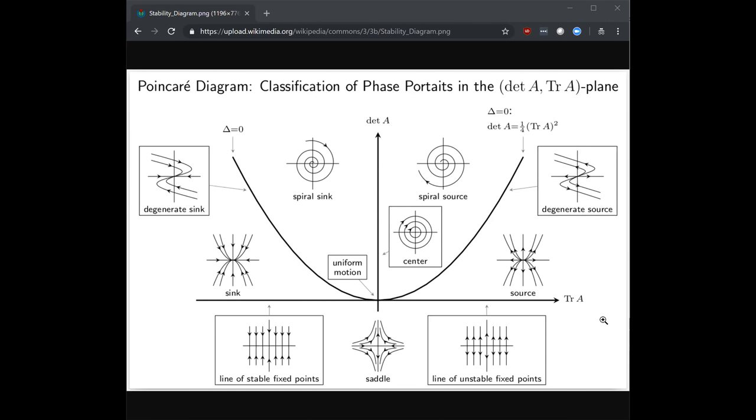This is a Poincare diagram. It will tell us, at least for two dimensions, the full behavior of fixed points. And so you can see there's five major sections to this map and each of them corresponds to a different type of fixed point. There's also fixed point behaviors that are along these lines as well that help us understand what's going on.